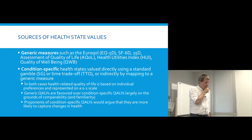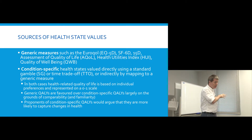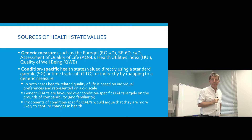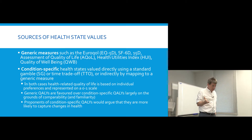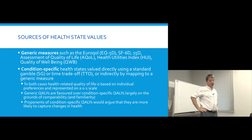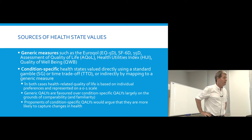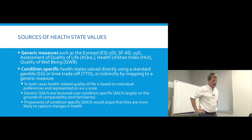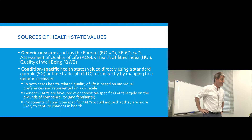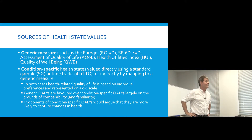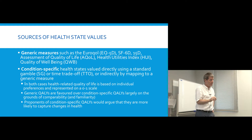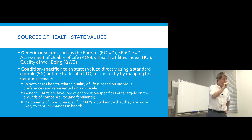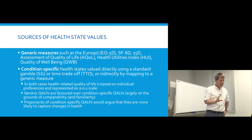There are two sources of health state values: generic measures and condition-specific health states. The generic measures include such things as the EQ5D. You might sometimes come across the SF6D — SF stands for short form, 6D for six dimensions. You may have come across the SF36, which is a 36-item measure — not very short — and it's not a preference-based measure. An SF36 score is derived by simply adding up the scores on each item, each given equal weight, so there are no preferences in it at all.